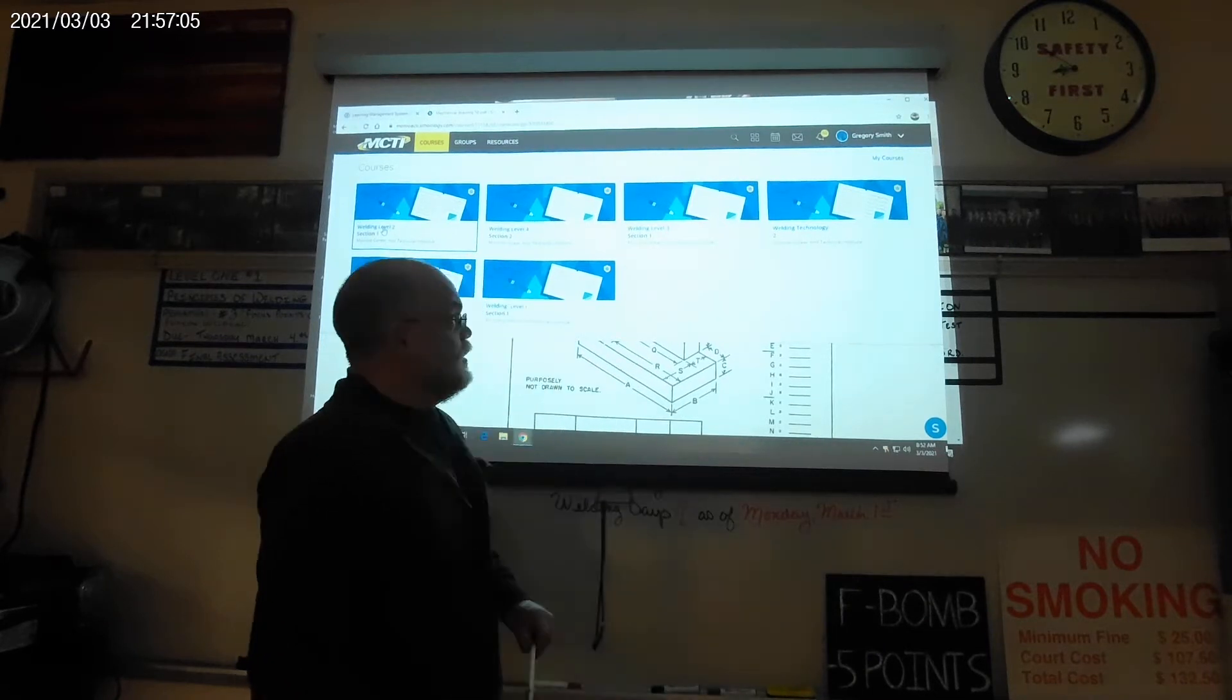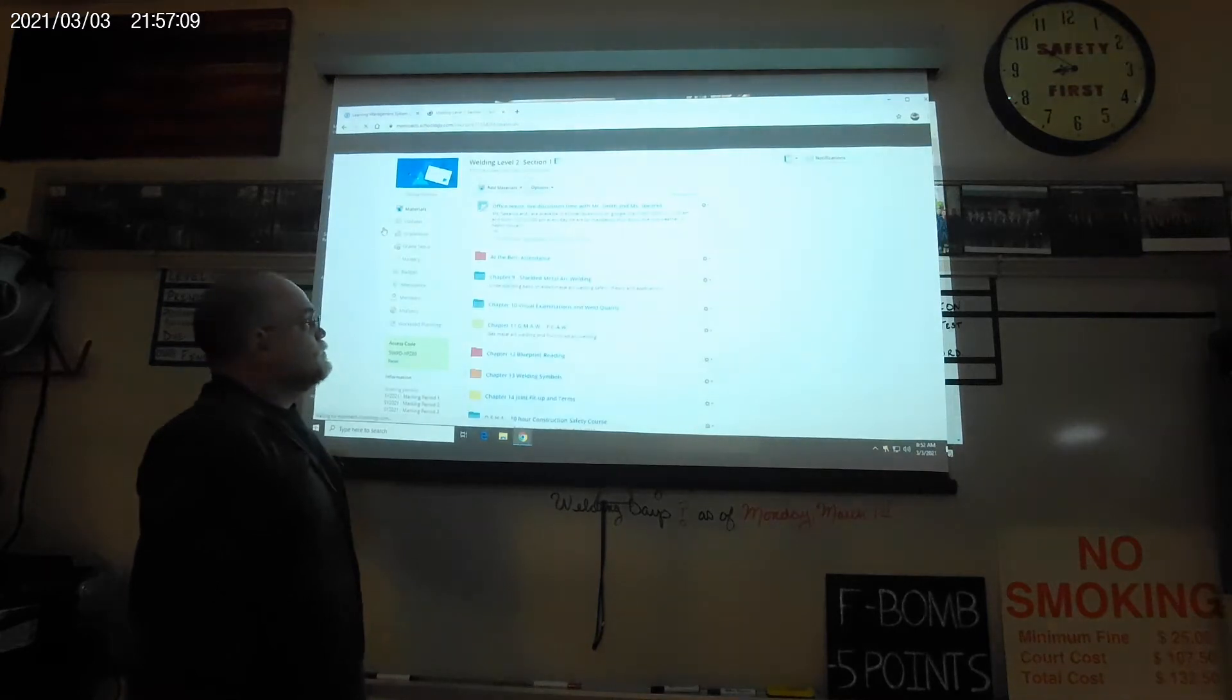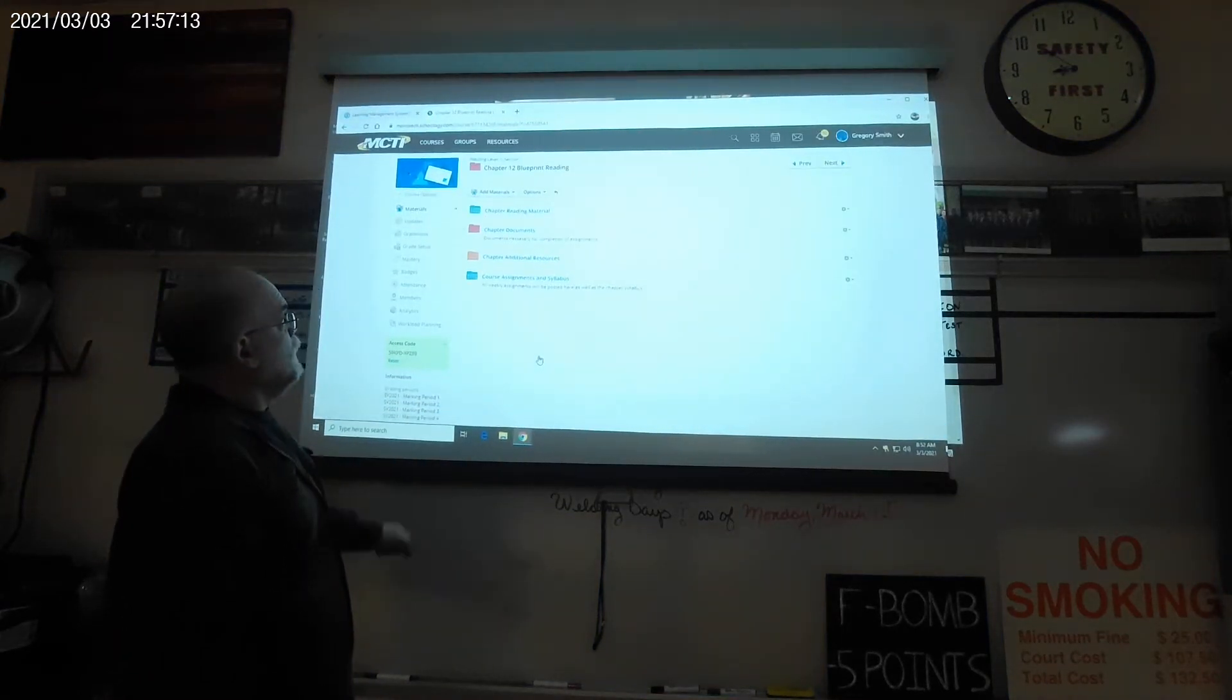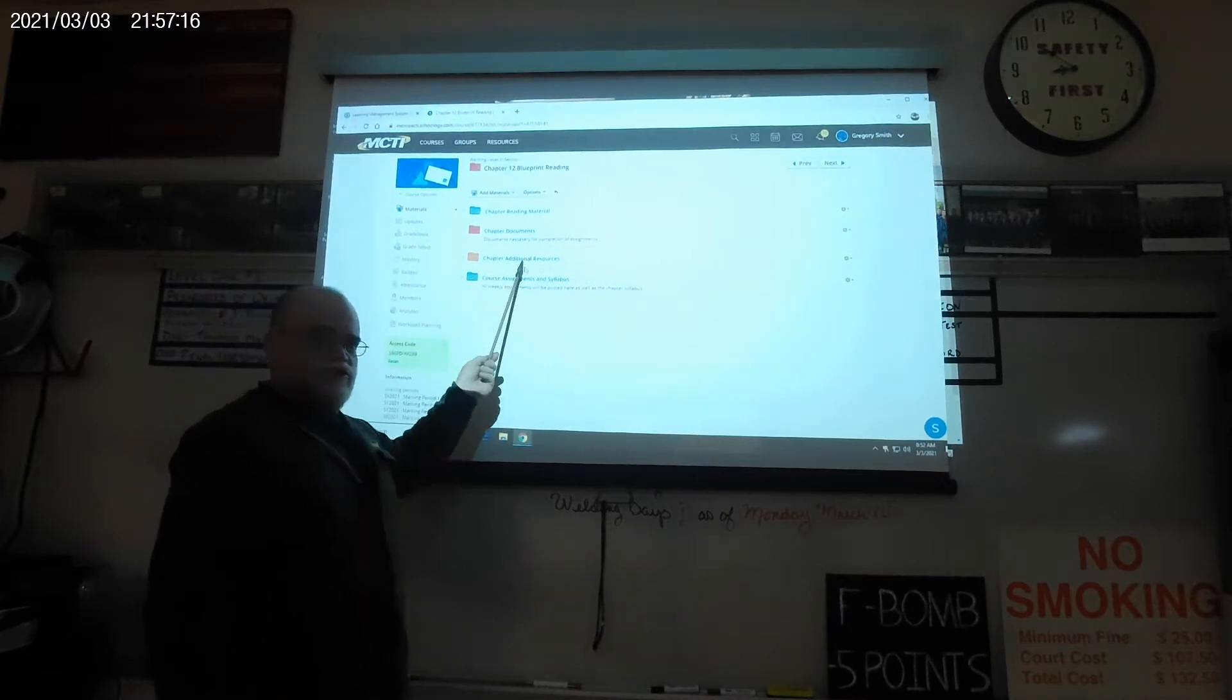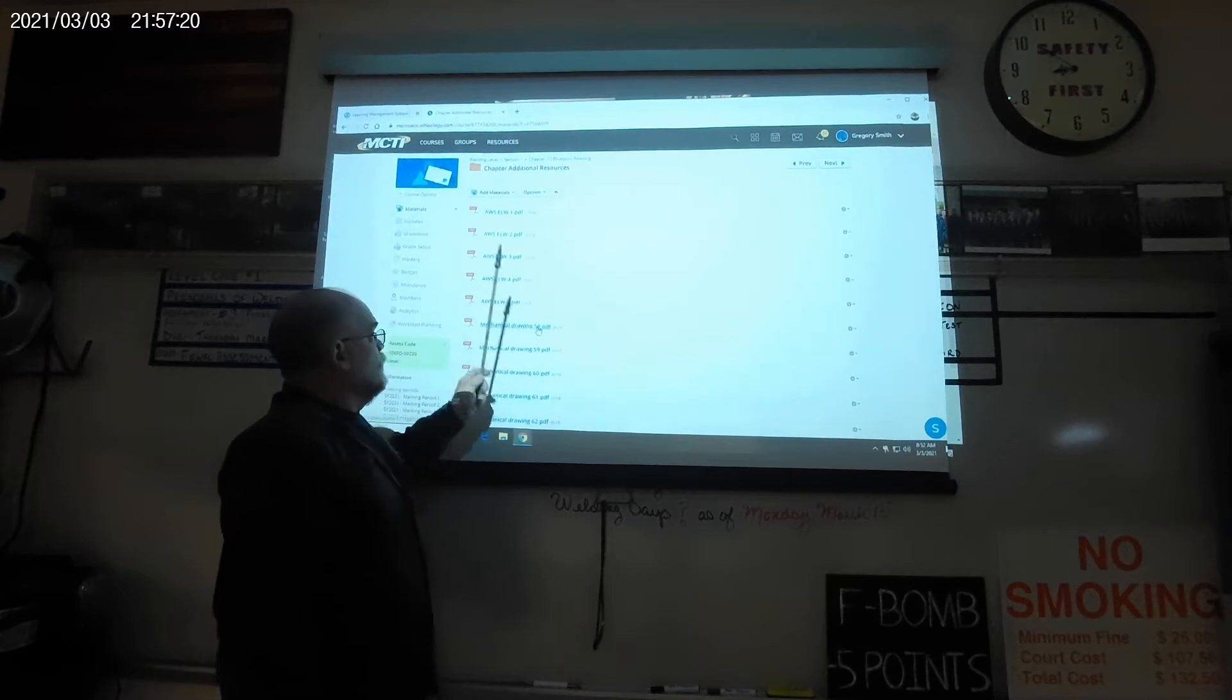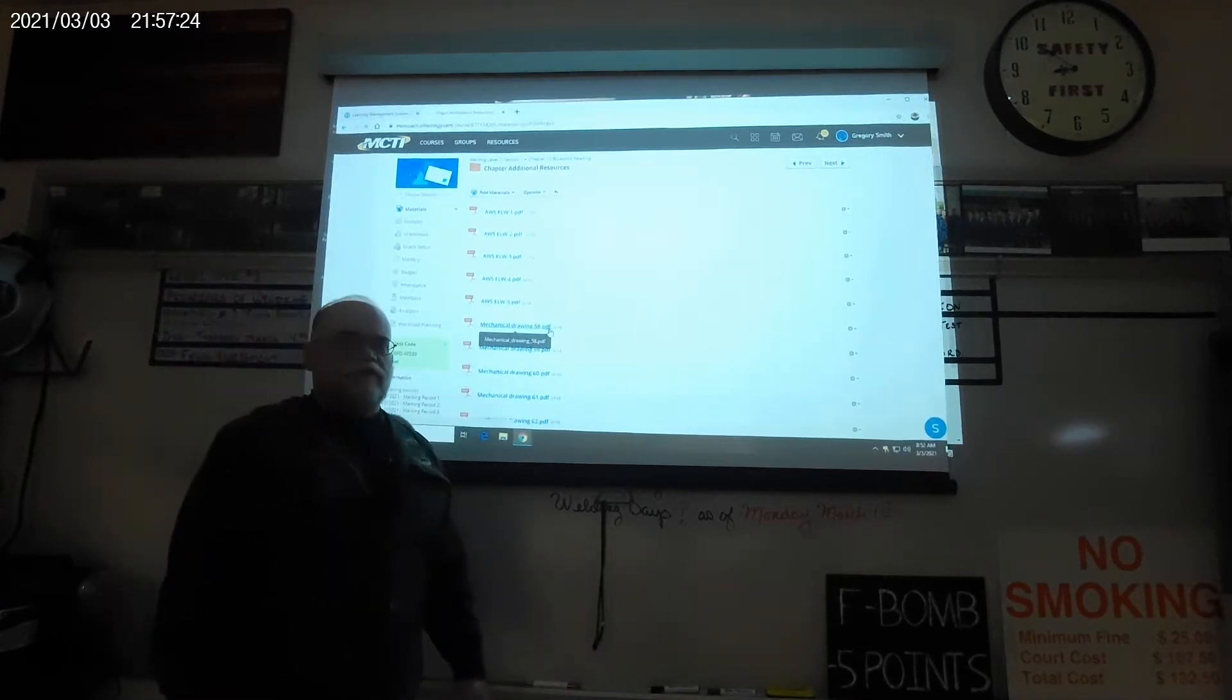We're going to start out with navigating Schoology to get to where we need to be. If you look here, let's go to level 2, go down to blueprint reading. Now additional resources is where the print will be located. So mechanical drawing 58 PDF, go ahead and do that.